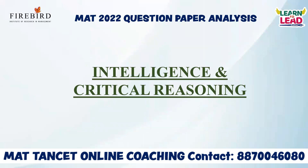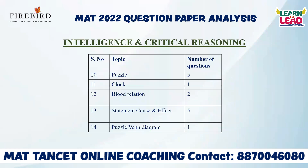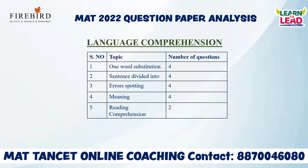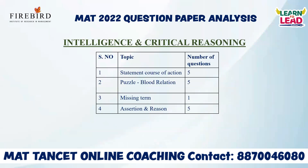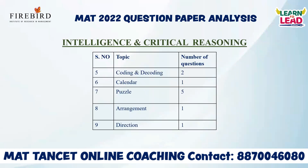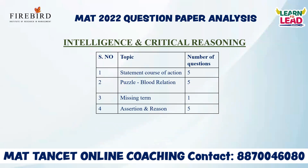Next, Intelligence and Critical Reasoning. They have covered almost 14 topics in this section. Coding and Decoding — two questions; Calendar — one; Puzzle — five questions (one puzzle is given and based on solving it, five questions are asked); Arrangement — one; Direction — one. In puzzle-type questions, totally 15 marks are based on puzzles, which can be of arrangement, blood relation, or directions type.